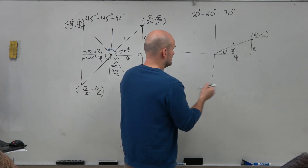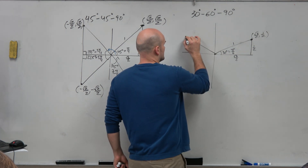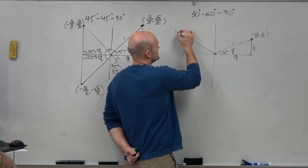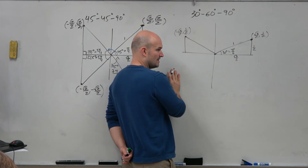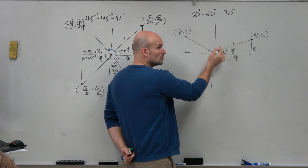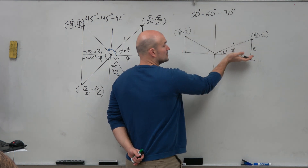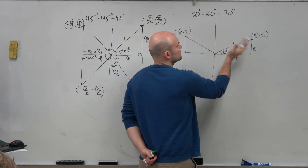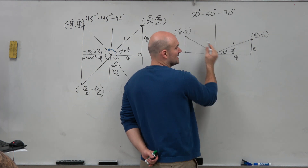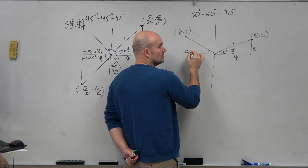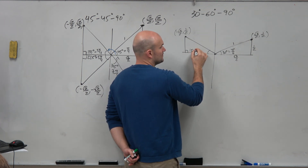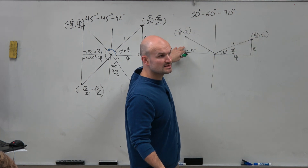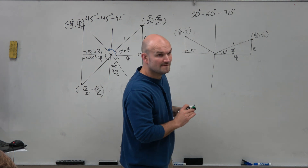Now we're going to do the reflections again. Reflecting about the y-axis into the second quadrant: the x is now negative, but the reference angle is the same. Halfway around the circle is 180 degrees, and we're 30 degrees short of 180, so this angle is 150 degrees. In terms of radians: 6 pi over 6 minus pi over 6 is 5 pi over 6.